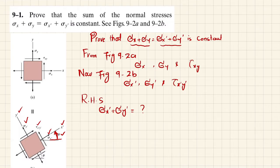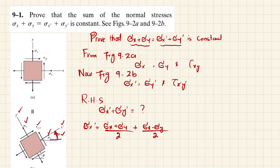If we rotate through angle θ, the stresses transform. From the transformation of stresses derivation, σx' is equal to (σx + σy)/2 plus (σx − σy)/2 times cos(2θ) plus τxy times sin(2θ). This is equation 1.